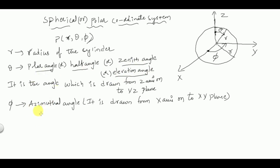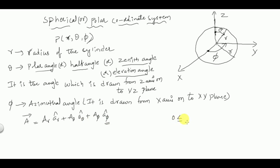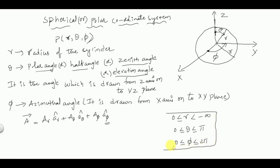Any vector on the spherical coordinate system is represented as: A = Ar·(ar-cap) + Aθ·(aθ-cap) + Aφ·(aφ-cap). The limits of r, theta, and phi in the spherical coordinate system are: 0 ≤ r < infinity, 0 ≤ theta ≤ π, and 0 ≤ phi ≤ 2π.